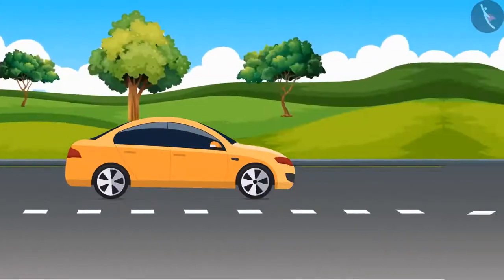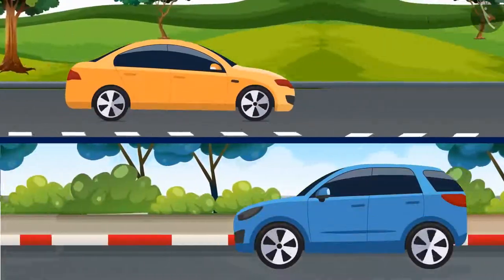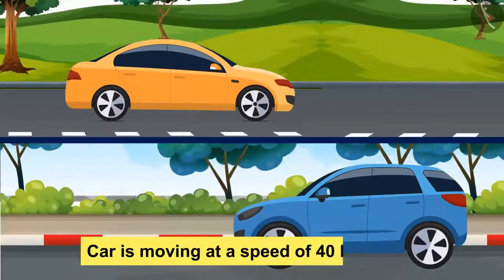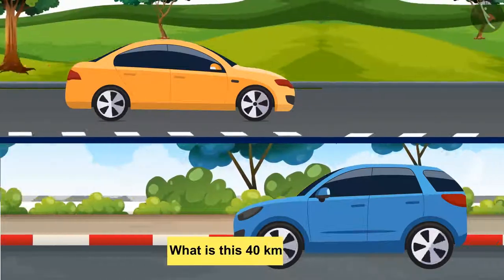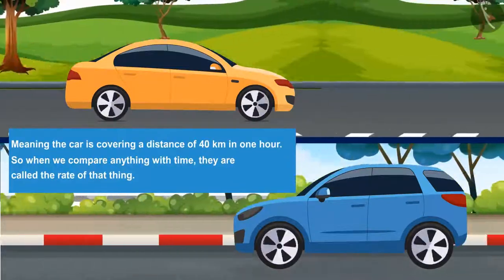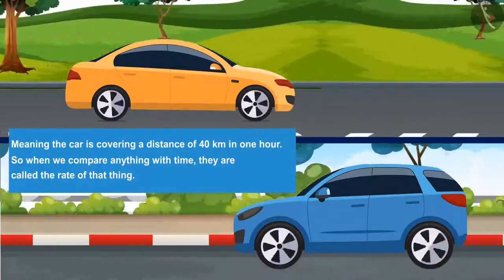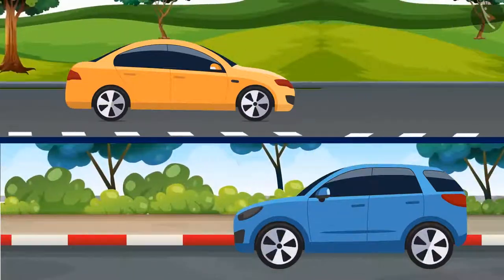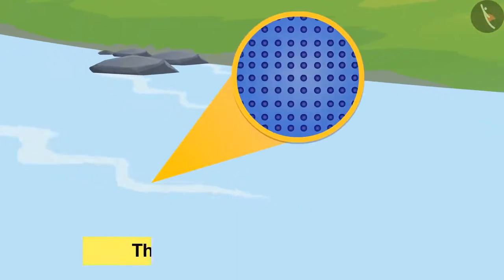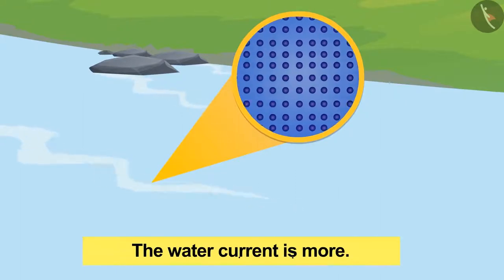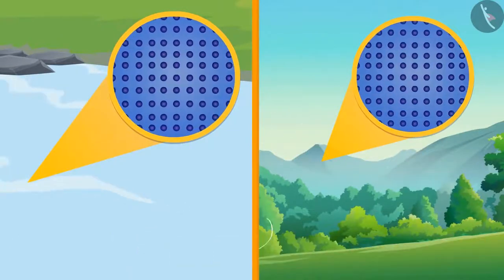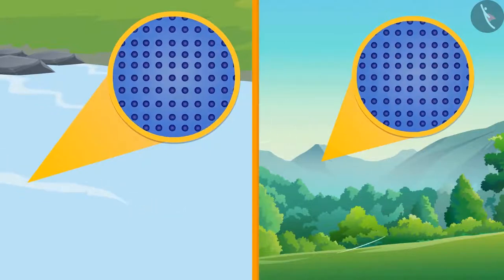You must have seen a moving car — some cars move fast and some slow. We say that the car is moving at the speed of 40 kilometers per hour, meaning the car is covering a distance of 40 kilometers in one hour. So when we compare anything with time, they are called the rate of that thing, like the speed of the car. We can see the flow of water in the river in the same way and say that the water current is more. Similarly, this is the case with air current as well. So it is fair to say that current is a physical quantity which shows a relation of different parameters with time.